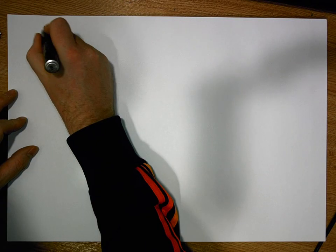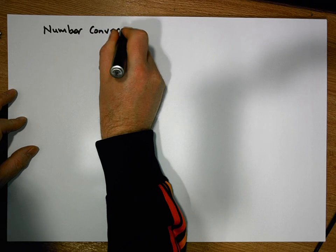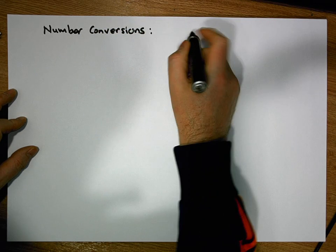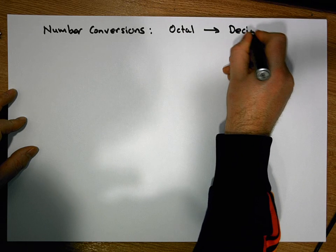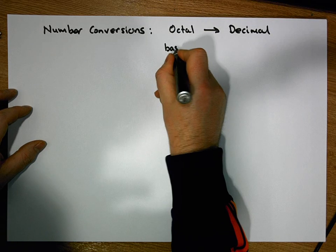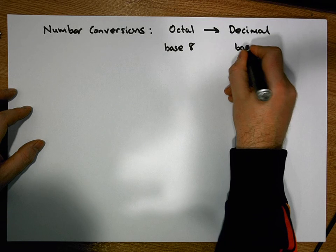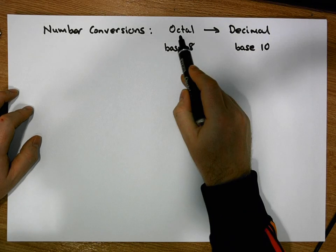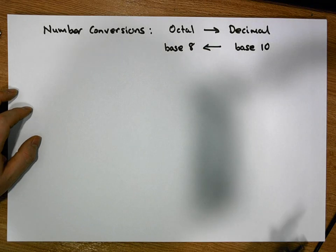Hi guys, this is Jonathan Lambert with the Mathematics Development and Support Service at the National College of Ireland. This short video is going to deal with number conversions — more importantly, we're going to concentrate on converting octal numbers into decimal numbers, and also converting back again from decimal to octal.